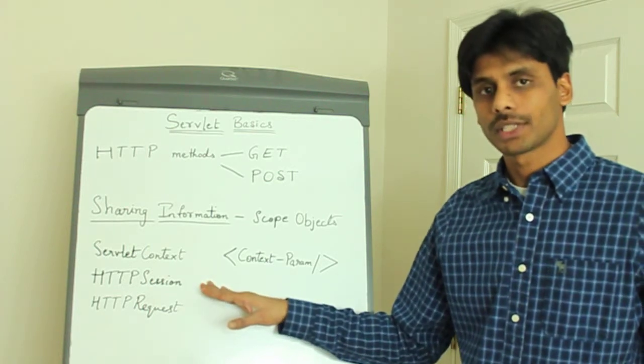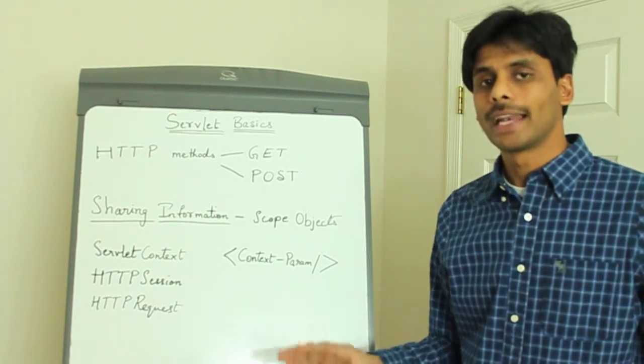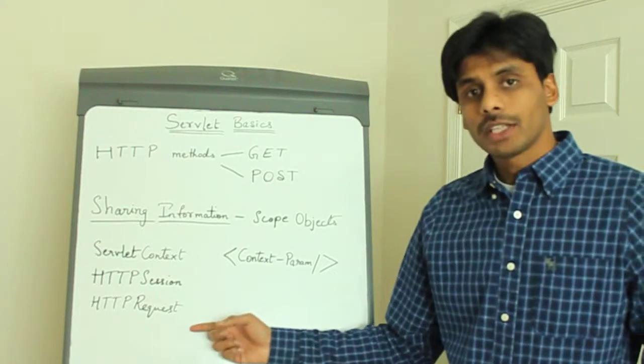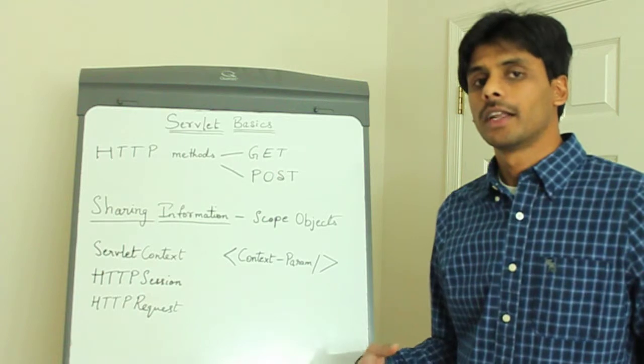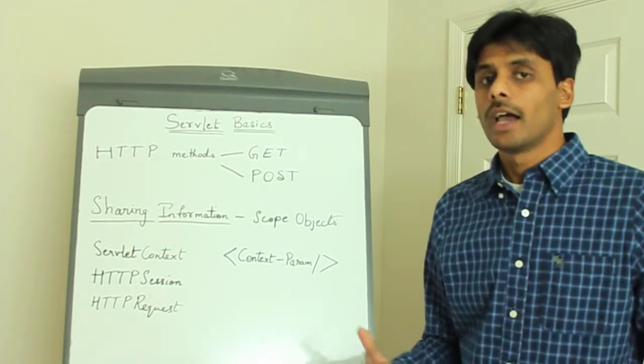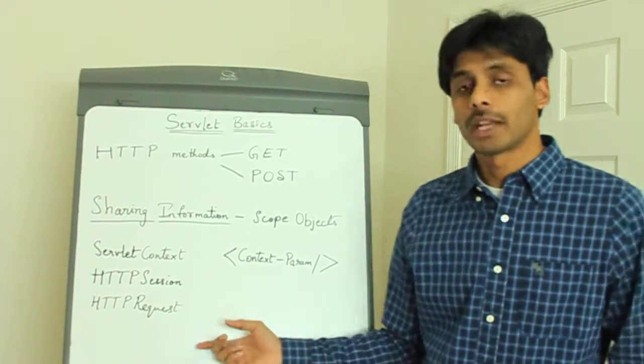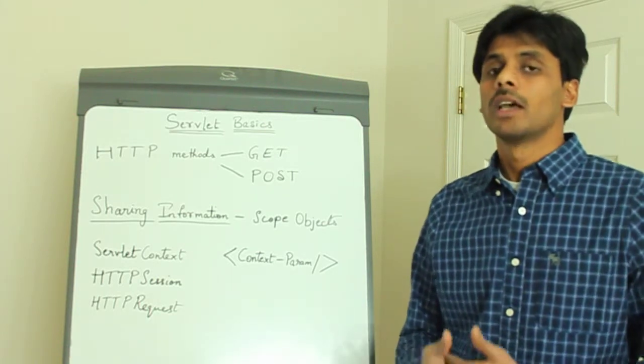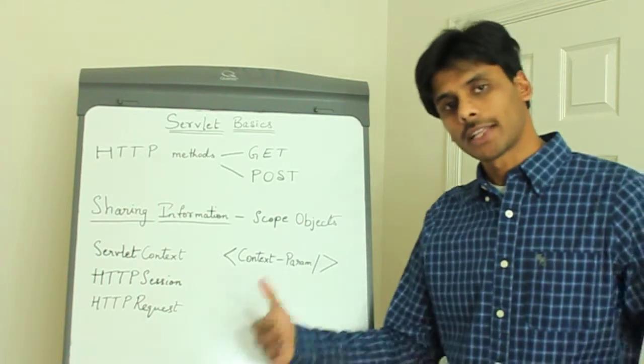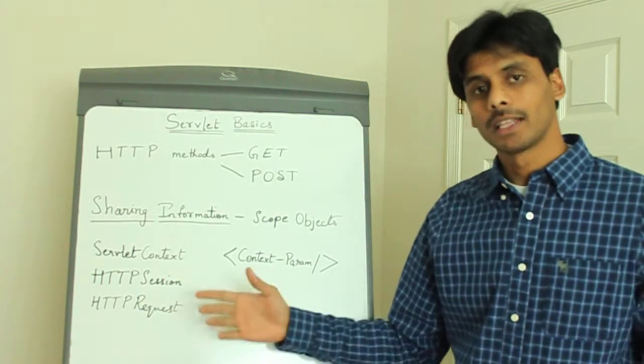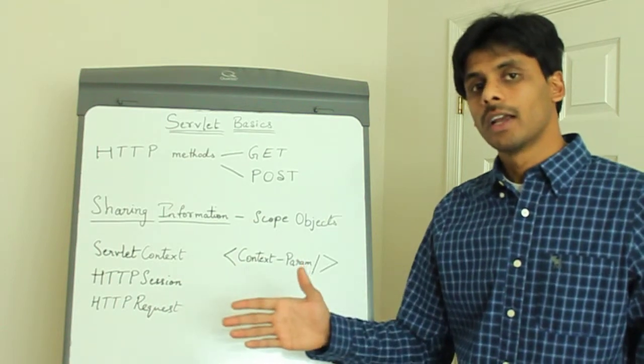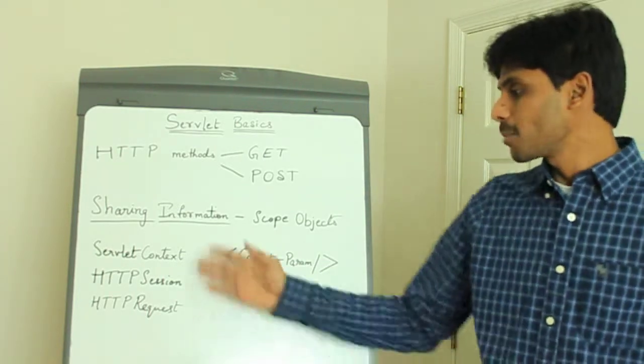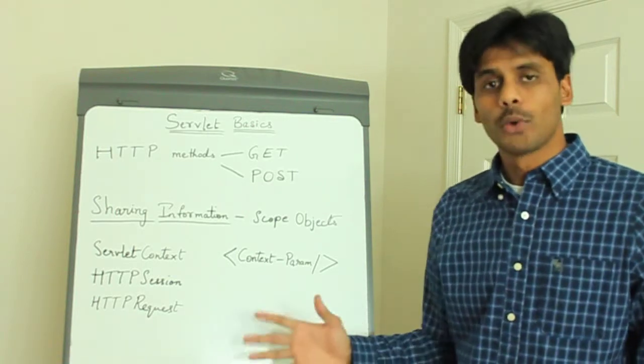Anything you set into the HTTP session will be available to any servlet classes or JSP pages within that session. The HTTP request is a class that's created by the container and is given to your service method, if you remember from the last session. Anything that's set into the HTTP request object will be available only for that request. So when an incoming request comes in, if your servlet forwards that request to another servlet or JSP, you can set something in servlet A and then forward your request to servlet B, and servlet B will have access to anything you set in servlet A. These are easier to explain when I do the hands-on, and I'll be giving you more examples there.